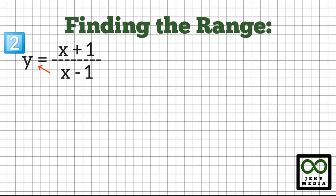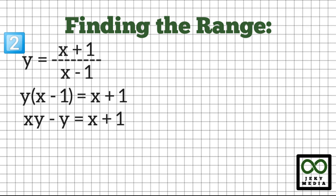Let's multiply the denominator on the right, (x minus 1), to the left, y. This will become y times (x minus 1) is equal to x plus 1. Now expanding the left side: y times x is xy, and y times negative 1 is minus y. Copy the right side: x plus 1.